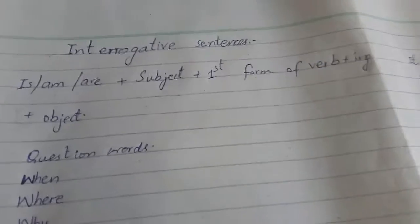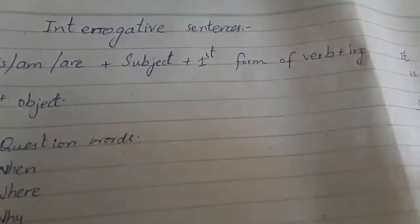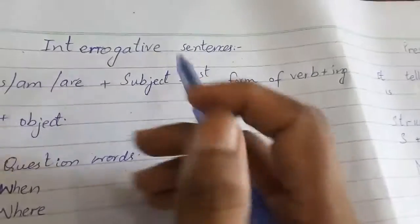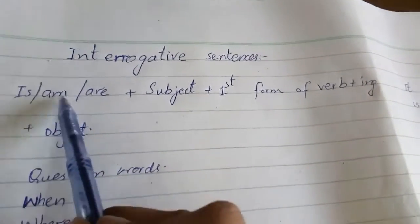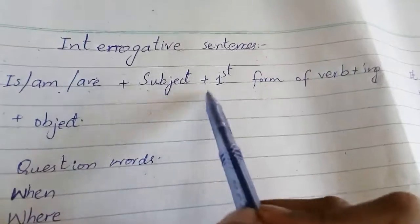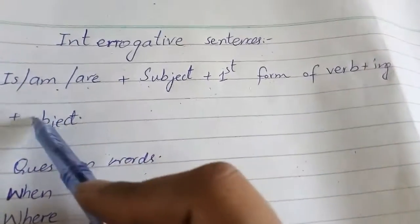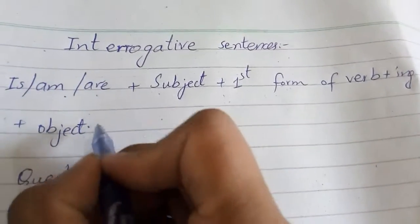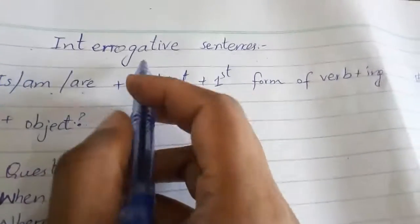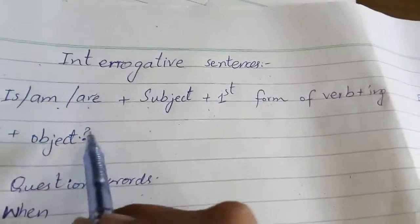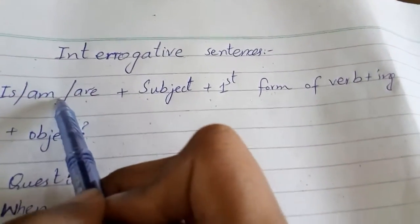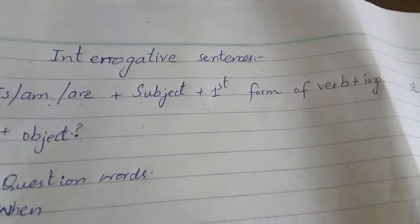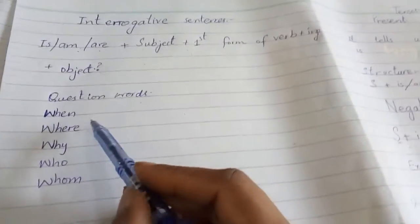Now let's move ahead to interrogative sentences. Whenever we make interrogative sentences in present progressive tense, we bring the helping verb to the start. The helping verb comes first, then we write the subject, then the '-ing' form of the verb, then the object, and at the end we put a question mark because this is a question.